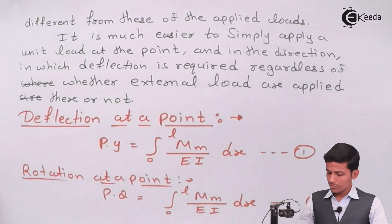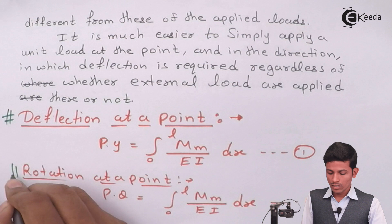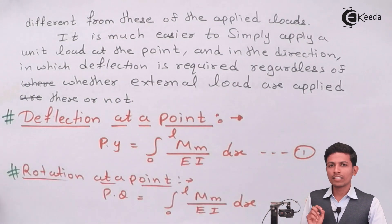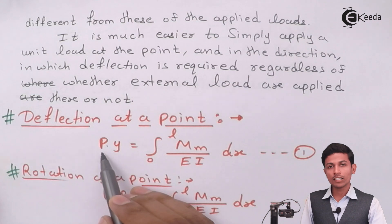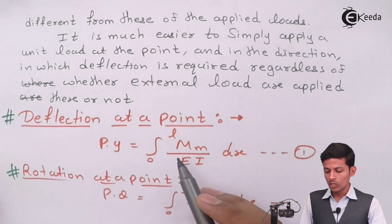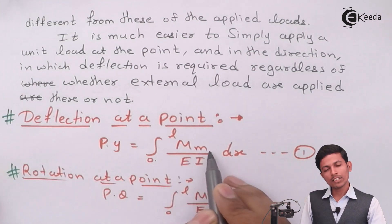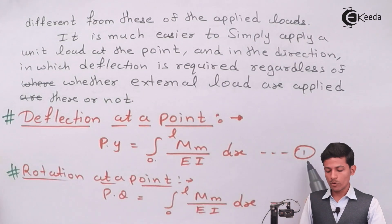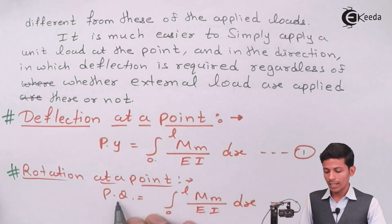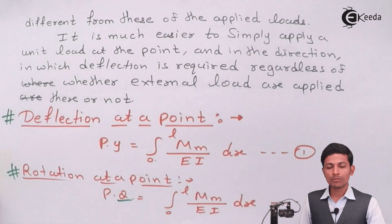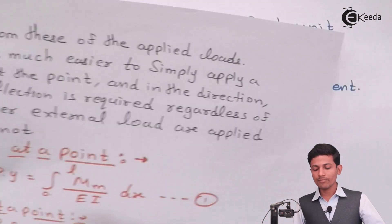This is the main part of this sum. Deflection at a point: P into y is equal to integral 0 to L, big M into small m upon EI dx, equation number one. Rotation at a point: P into theta is equal to integral 0 to L, M into small m upon EI dx, equation number two.